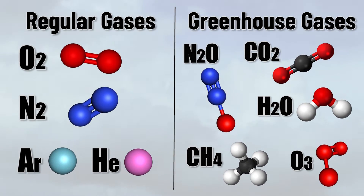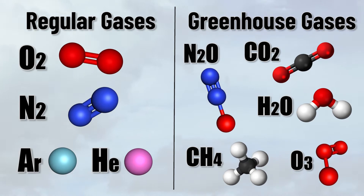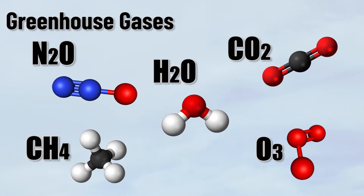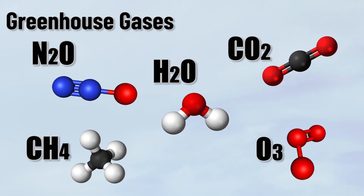Well, clearly the type of atom in the molecule doesn't matter. Oxygen and ozone, for example, are both made of oxygen atoms. But the one thing these greenhouse gases all have in common is that they have at least three atoms — and that's the important part. But why is it important, and how is it related to their greenhouse properties?